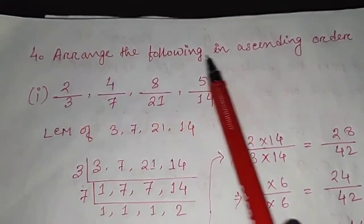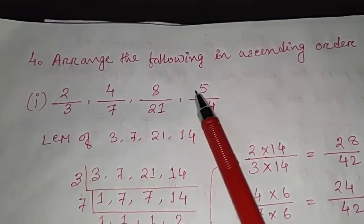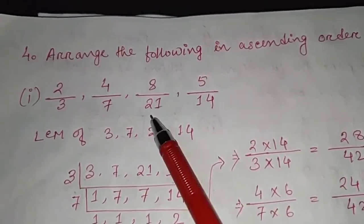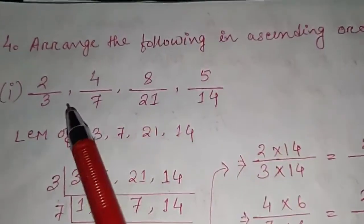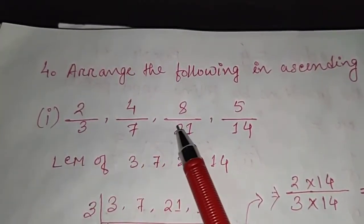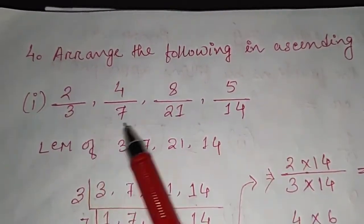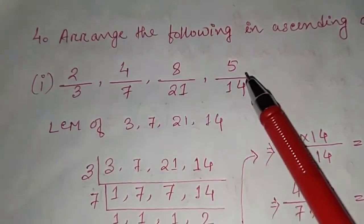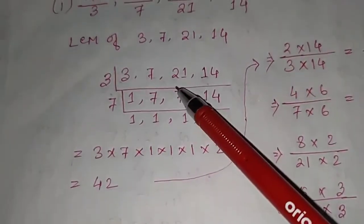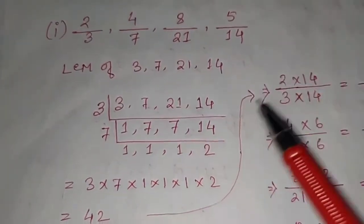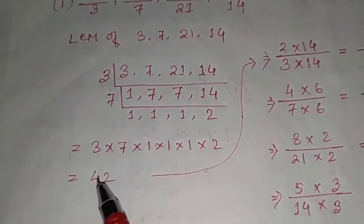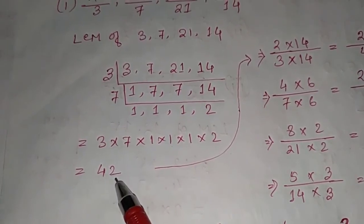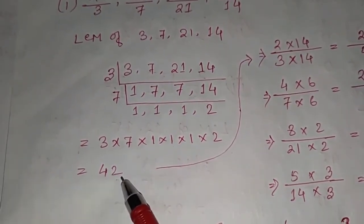Number 4: arrange the following fractions in ascending order — that is, from smallest to largest. The fractions are 2/3, 4/7, 8/21, and 5/14. Since all denominators are different, we take the LCM of 3, 7, 21, and 14, which equals 42.